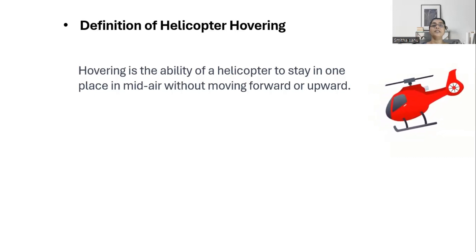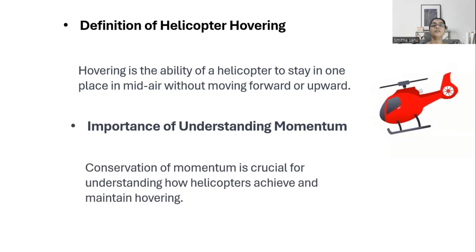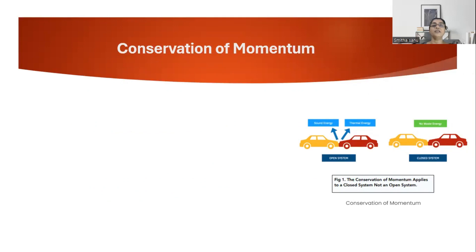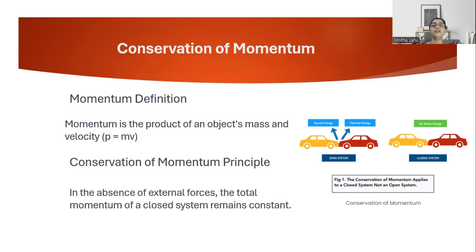The concept of hovering is basically the application of conservation of momentum. Hence it's very crucial for us to understand how conservation of momentum applies to the hovering of a helicopter. Momentum is basically the product of mass and velocity. Conservation of momentum has certain assumptions: the system you are considering should be a closed system, meaning there shouldn't be any external forces acting on it. For a closed system where external forces are zero, total momentum is always constant. This is called conservation of momentum.